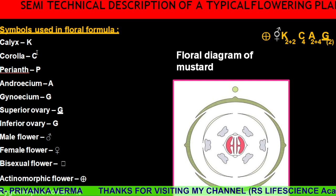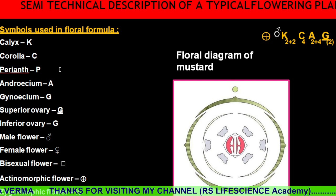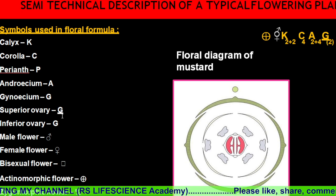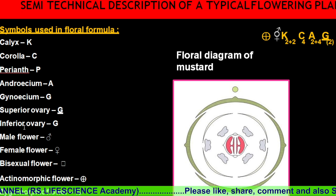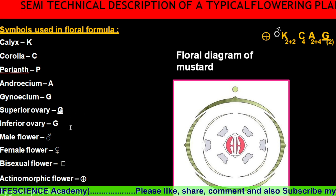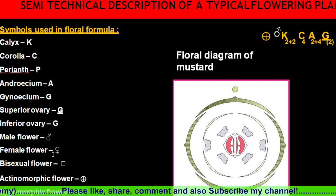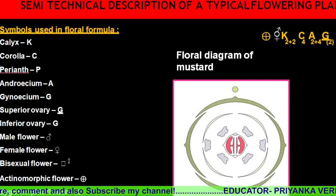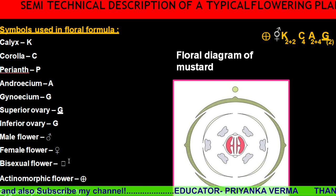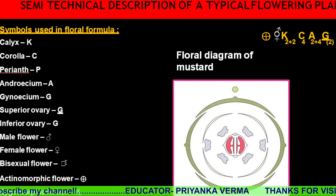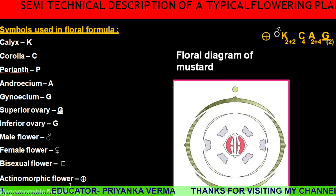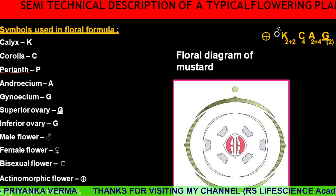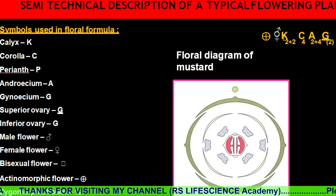Calyx is represented by K. Corolla by C. P represents the perianth. Androsium is represented by A, and Gynosium by G. For a superior ovary, G is written normally, and for an inferior ovary, G is written with an underline.